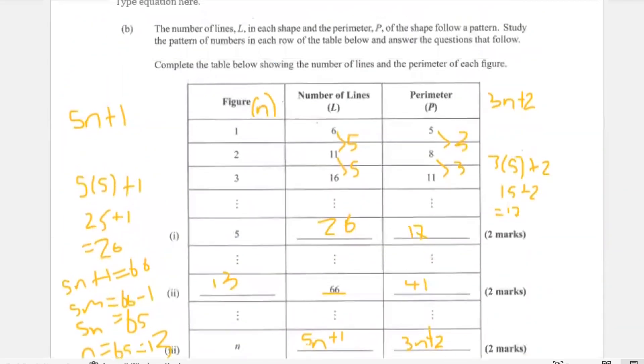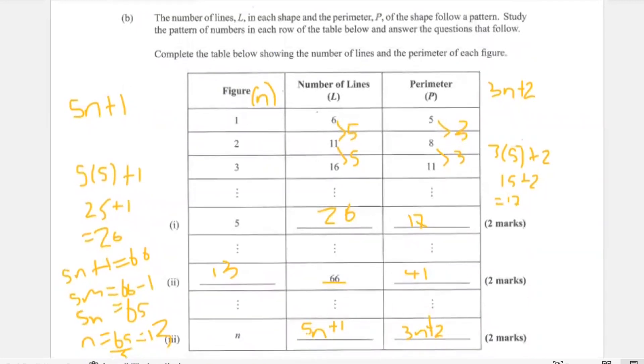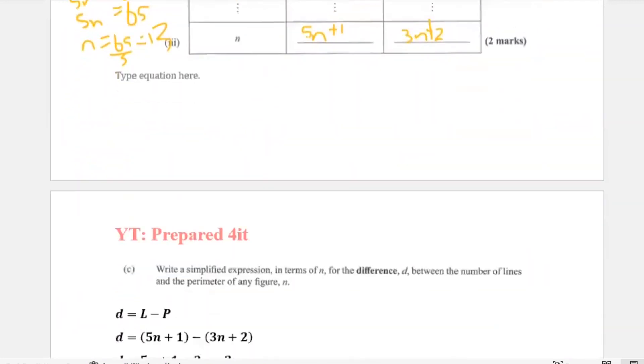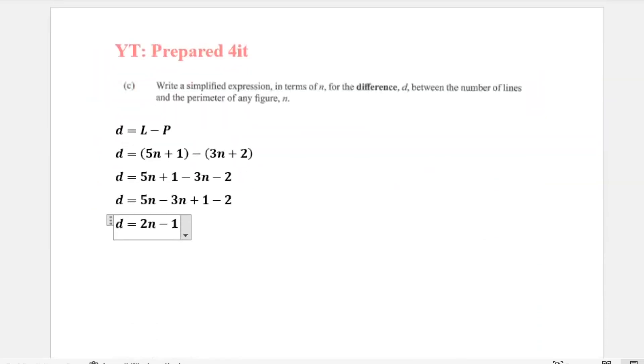Will 2n minus 1 give us the difference between the two? If we look, 6 minus 5 will give us 1. Our n value is 1, so 2 times 1 is 2 minus 1, that will give us 1. So indeed that formula is correct. You can take a minute and observe that one.